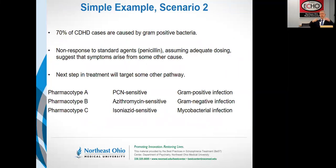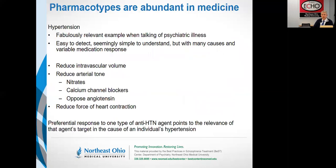To summarize this example: we can look at pharmacotypes — response or non-response to penicillin, or to azithromycin, or to isoniazid — and following that we can ultimately deduce the underlying causes of this clinical syndrome. In these hypothetical pharmacotypes, we can see that cough and fever can be parsed into gram-positive infections, gram-negative infections, and tuberculous infections. I don't think that's controversial, except for the part where I've made a little fun of the way our profession goes about doing things.